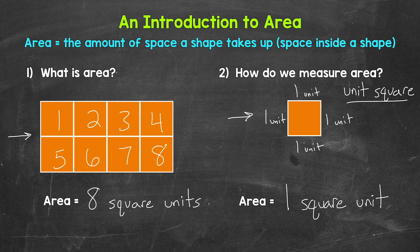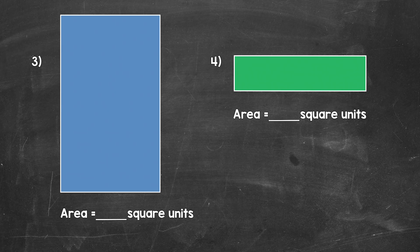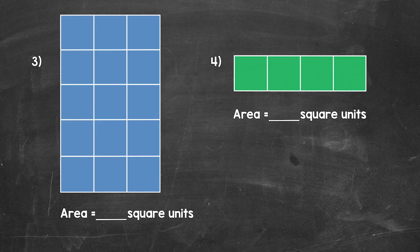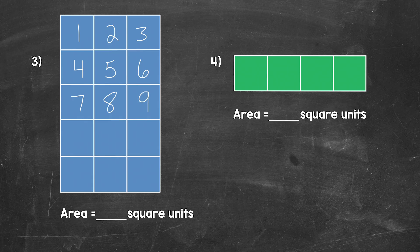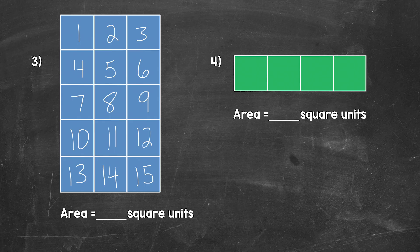Let's move on and try two more examples — numbers three and four. We have a blue rectangle and a green rectangle. Let's find the area of both by counting the squares. Starting with number three: how many unit squares did it take to cover that rectangle? 1, 2, 3, 4, 5, 6, 7, 8, 9, 10, 11, 12, 13, 14, 15. So the area of this rectangle is 15 square units.